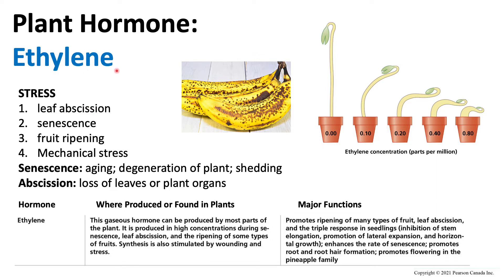The opposite of ethylene — since ethylene is promoting degeneration, aging, and death — would be cytokinin. Cytokinin does the reverse: it promotes the opposite of senescence, reducing the effects of aging, degeneration, and shedding.